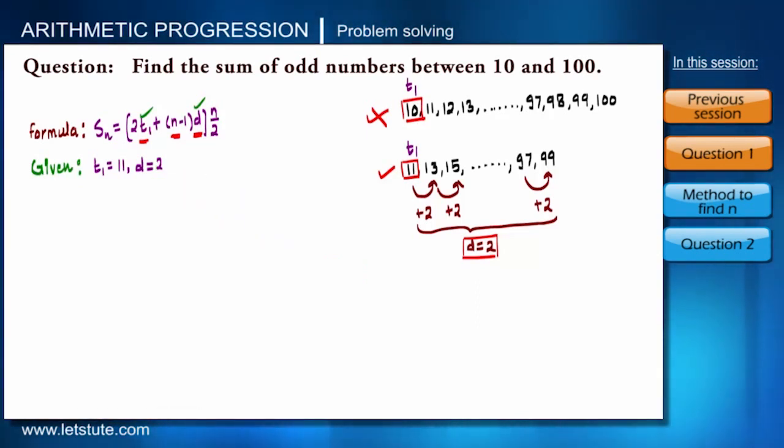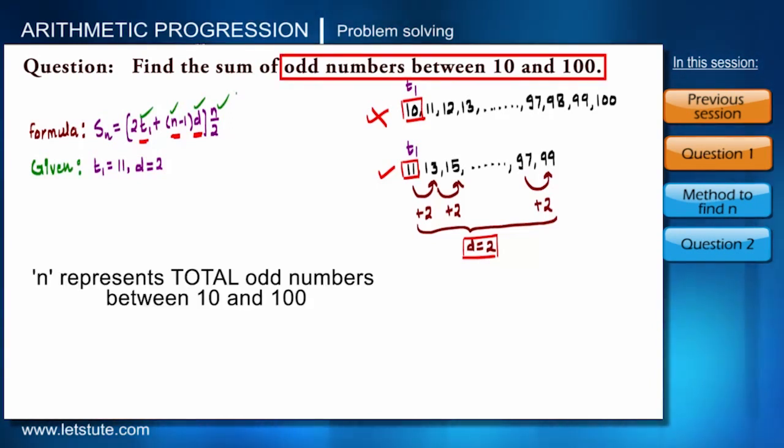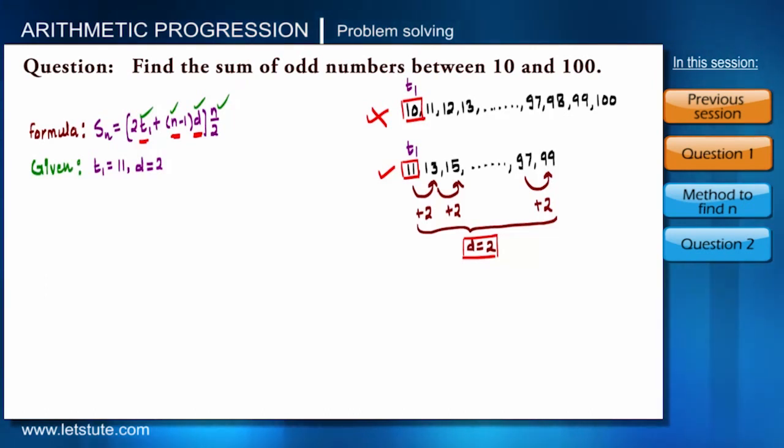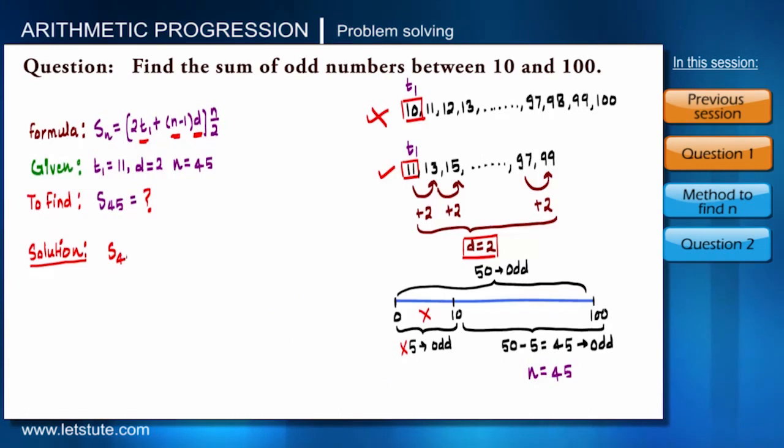Now let us go to third parameter N. Here N represents total odd numbers between 10 and 100. Finding this is bit interesting. There are always half even numbers and half odd numbers. So from 0 to 100 there will be 50 odd numbers, and from 0 to 10 there will be 5 odd numbers. So from 10 to 100, there will be 45 odd numbers only.